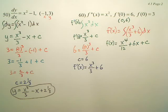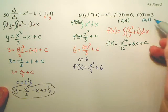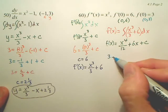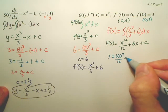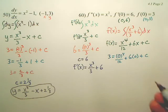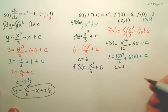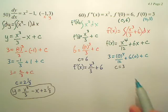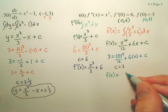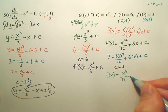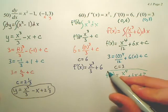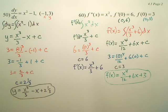If I want the particular solution, I use these values — it's like a coordinate (0, 3). So 3 goes here: 0 to the fourth over 12 plus 6 times 0. Luckily this one's pretty easy — c is 3, because all these terms go to zero. So my original function is x to the fourth over 12 plus 6x plus 3. This is my original function.